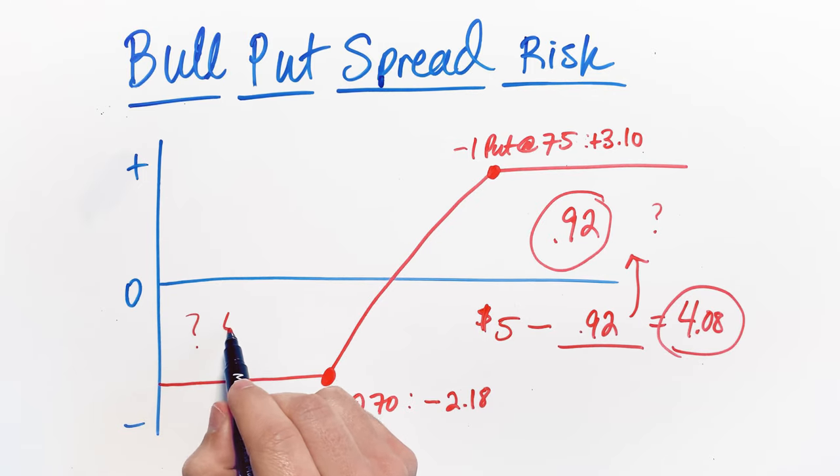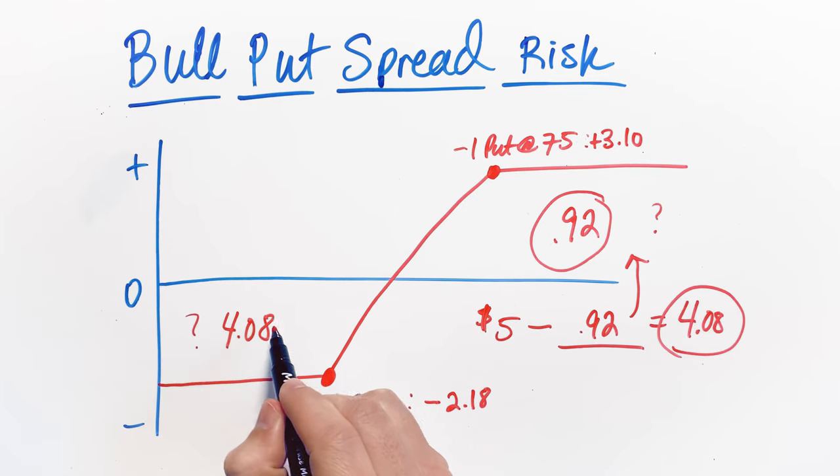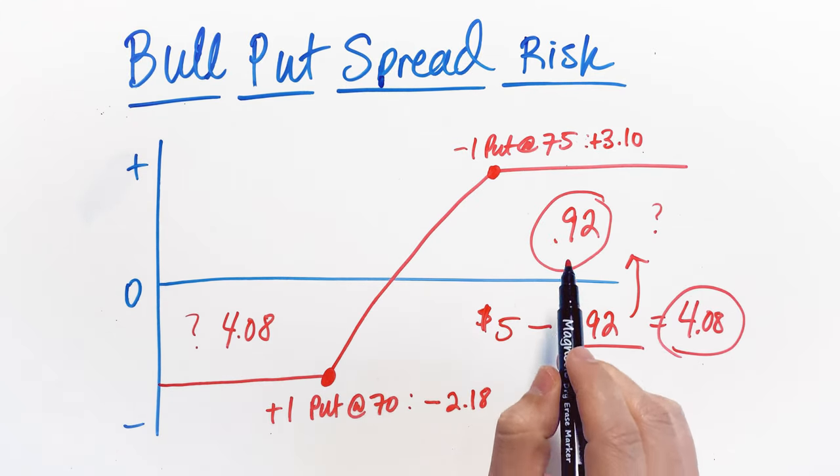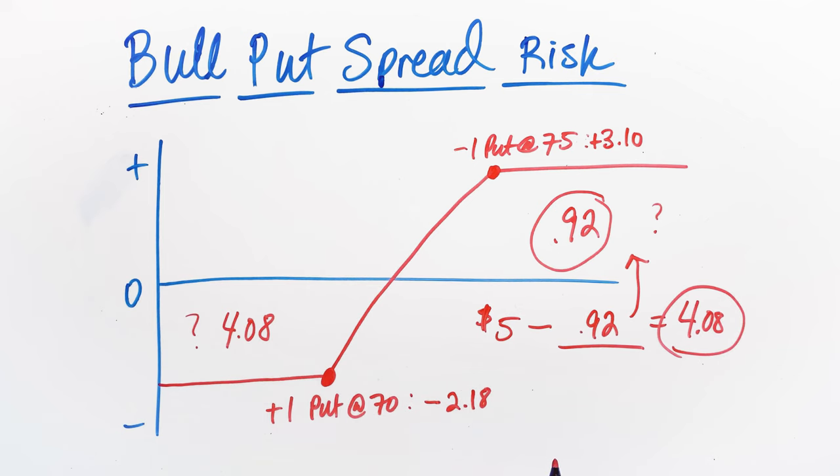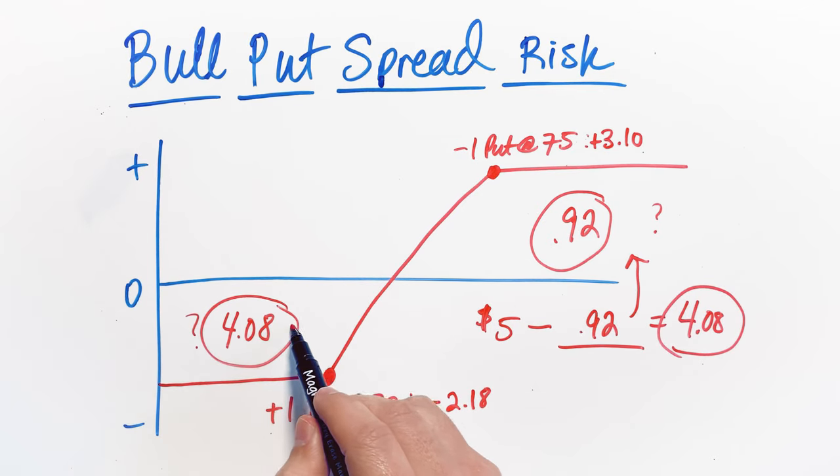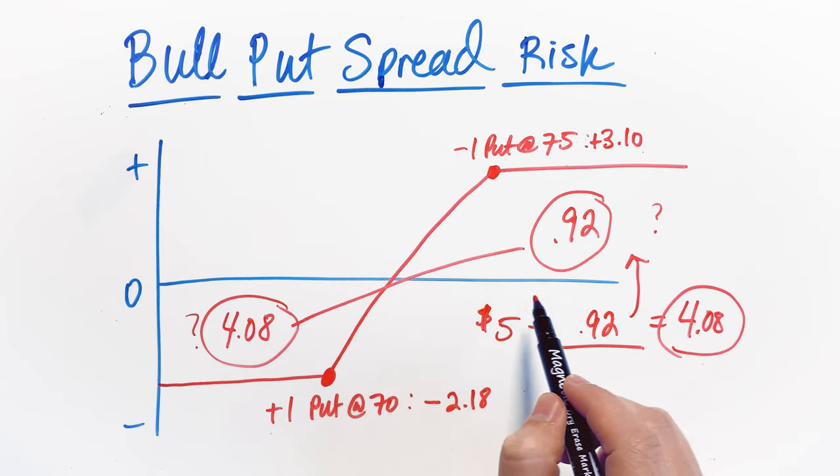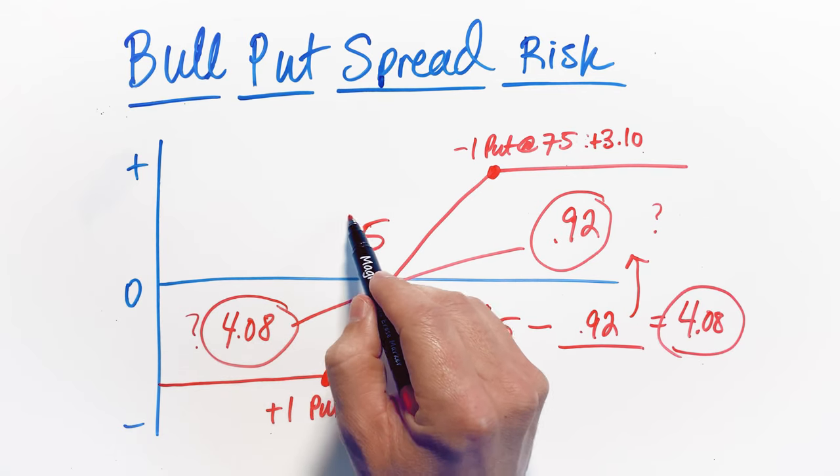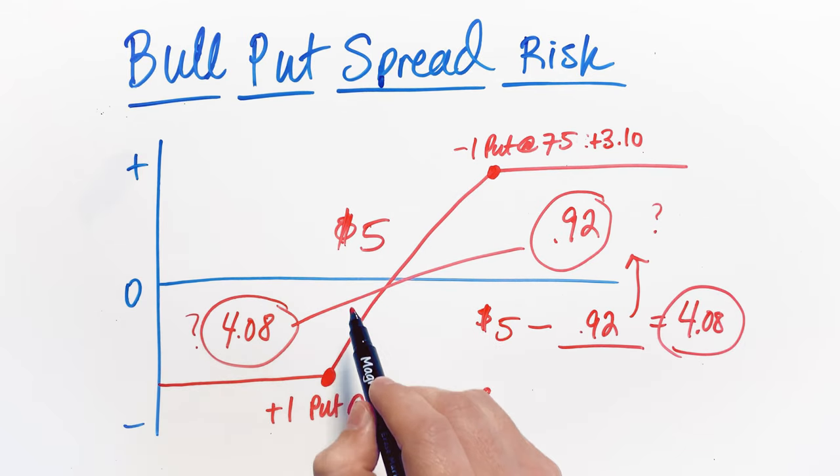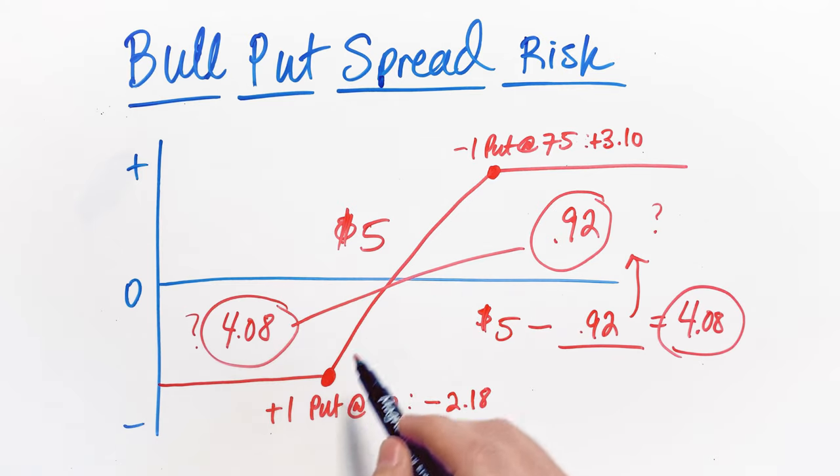To complete the formula, we basically have $4.08 here as far as risk. We've got $0.92 of potential profit premium. A good way to double-check your math is simply to add the risk and the profit potential back together and that should equal the $5 spread width. If we take the $4.08 and we add this to the $0.92 that we have here, you can see that that does give us truly that $5 premium and that is the difference between the strike prices. We know that this whole formula and this calculation balances out.